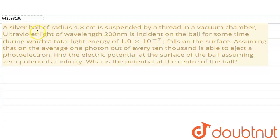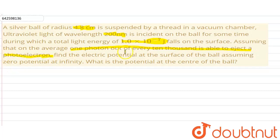Hello everyone. Our question is: A silver ball of radius 4.8 cm is suspended by a thread in a vacuum chamber. Ultraviolet light of wavelength 200 nm is incident on the ball for some time, during which a total light energy of 1 × 10⁻⁷ joules falls on the surface. Assuming that on average 1 photon out of every 10,000 is able to eject a photoelectron, we have to find the electric potential at the surface of the ball assuming zero potential at infinity. What is the potential at the center of the ball?